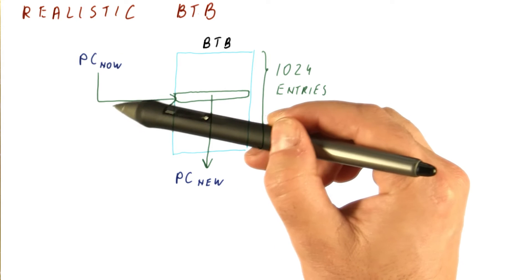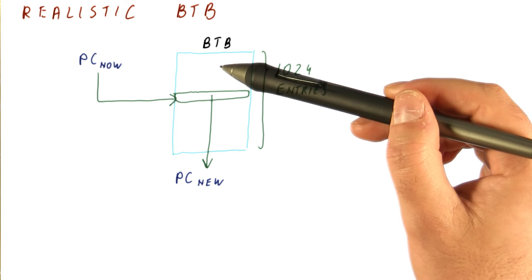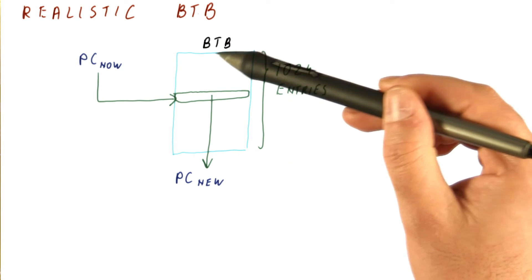And note also that we need this mapping function to be really simple because any delay in computing the mapping function means that we need an even smaller B2B so that the whole thing finishes in one cycle.